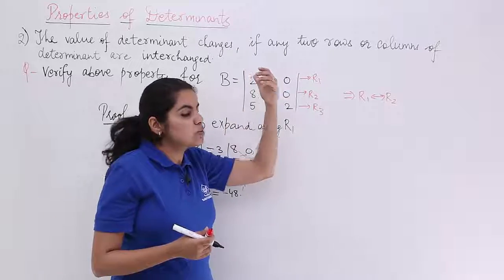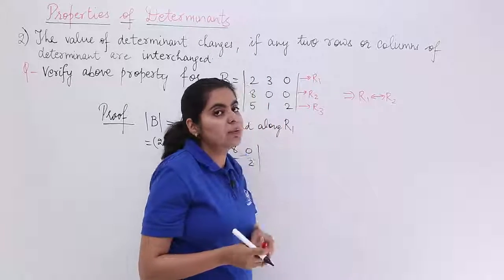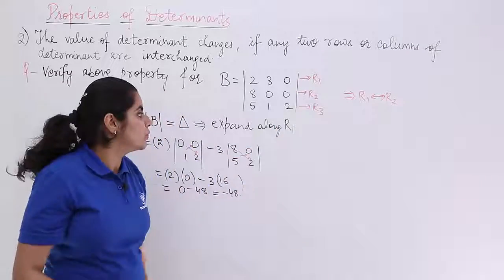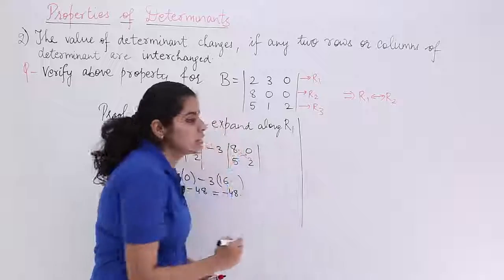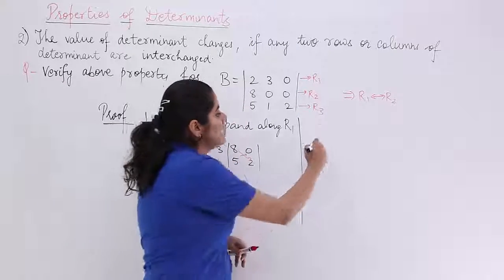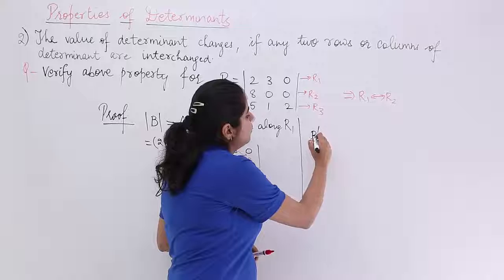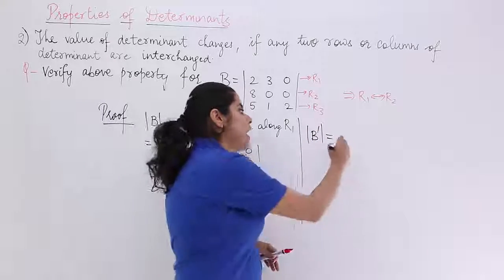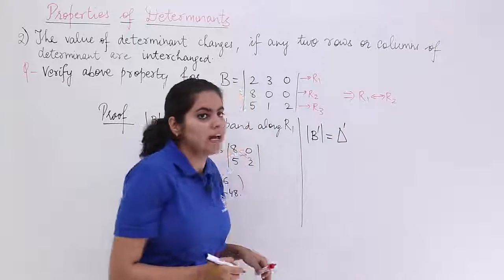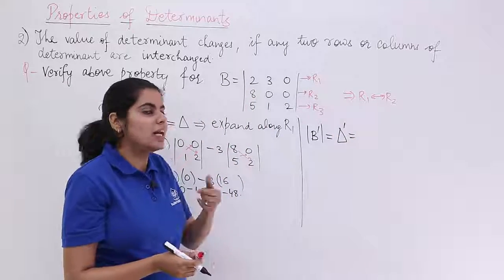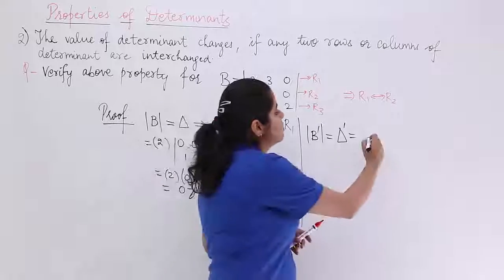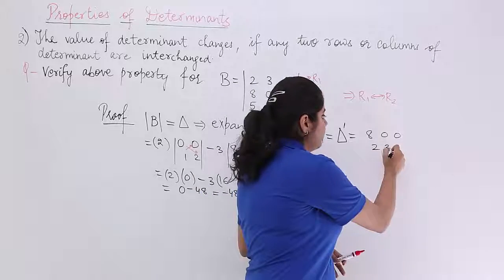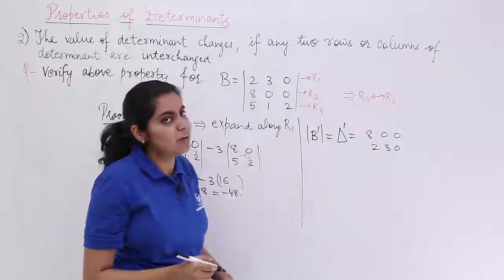Now to verify the property, let's change the determinant by interchanging row 1 and row 2. We create a new determinant B' with del dash. The rows change: the first row is now 8, 0, 0; the second row is 2, 3, 0; the third row is unchanged at 5, 1, 2.